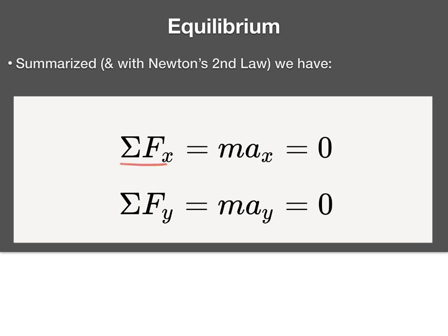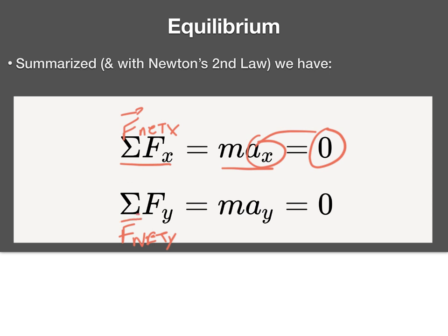More specifically, we have this equation: the net force in X equals mass times acceleration in X, and since there's no acceleration, that equals zero. The same for Y: the net force in Y equals zero because acceleration is zero — which was the first question we asked. Now we'll go through a series of example problems to reinforce this. These are all static equilibrium problems to begin with, then we'll get to dynamic equilibrium, and then non-equilibrium problems.